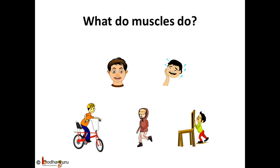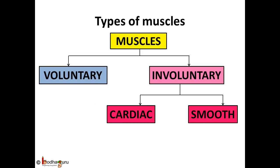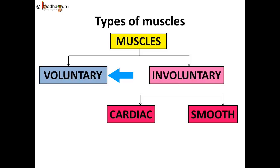Every muscle helps us in a particular movement. Just like bones, there are different kinds of muscles too. The type of muscle depends on whether the muscles are attached to the bones or not. Muscles which are attached to the bones are called skeletal muscles.